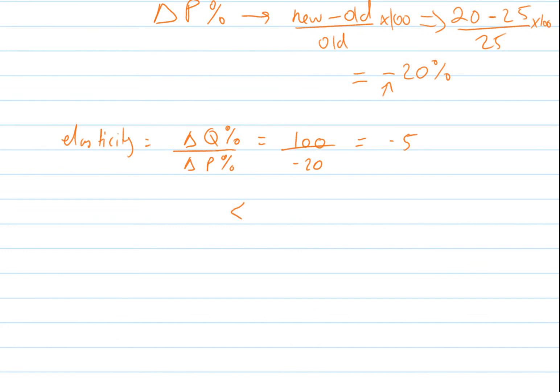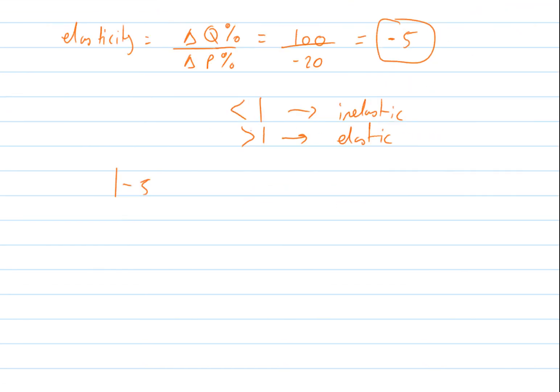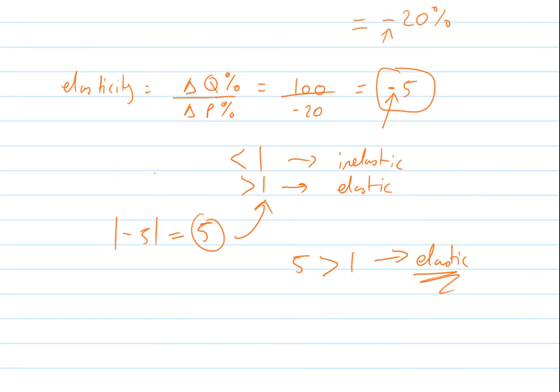To know whether this is elastic or not, the rule is: if it's less than 1, it's inelastic; if it's greater than 1, it's elastic. We always look at the absolute term. The absolute value of minus 5 is 5. We apply this rule: 5 is greater than 1, hence our demand is elastic. Always include the negative sign when calculating elasticity of demand because the relationship between Q and P is inverse.